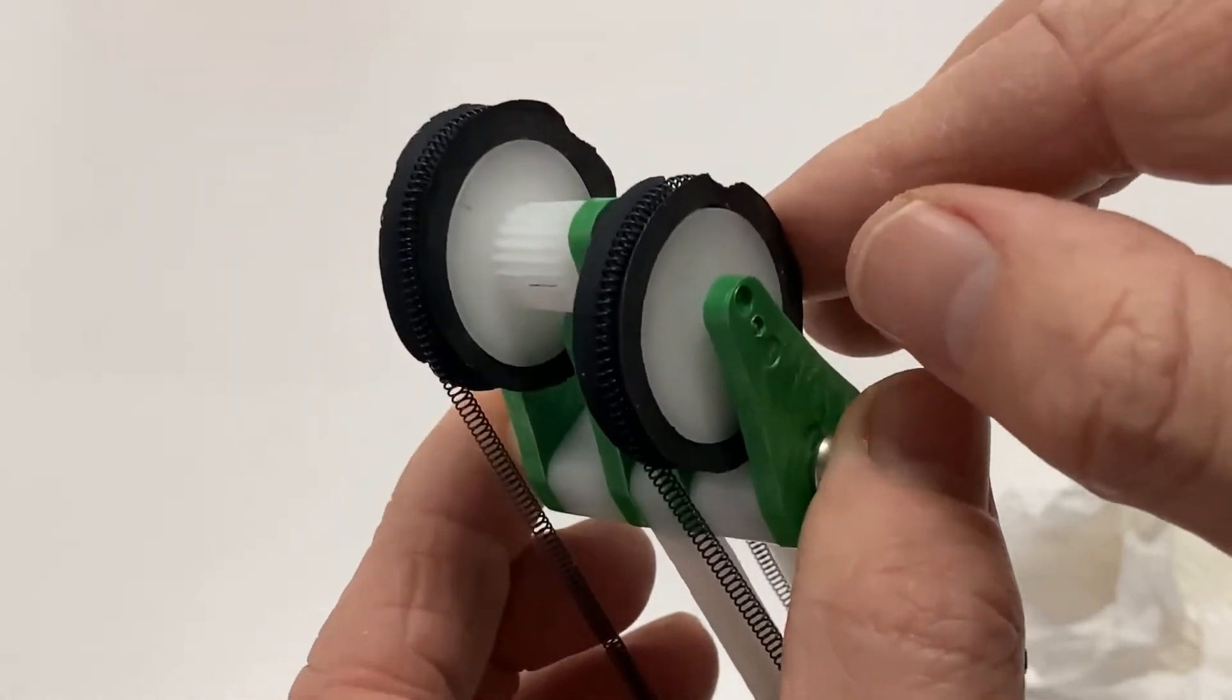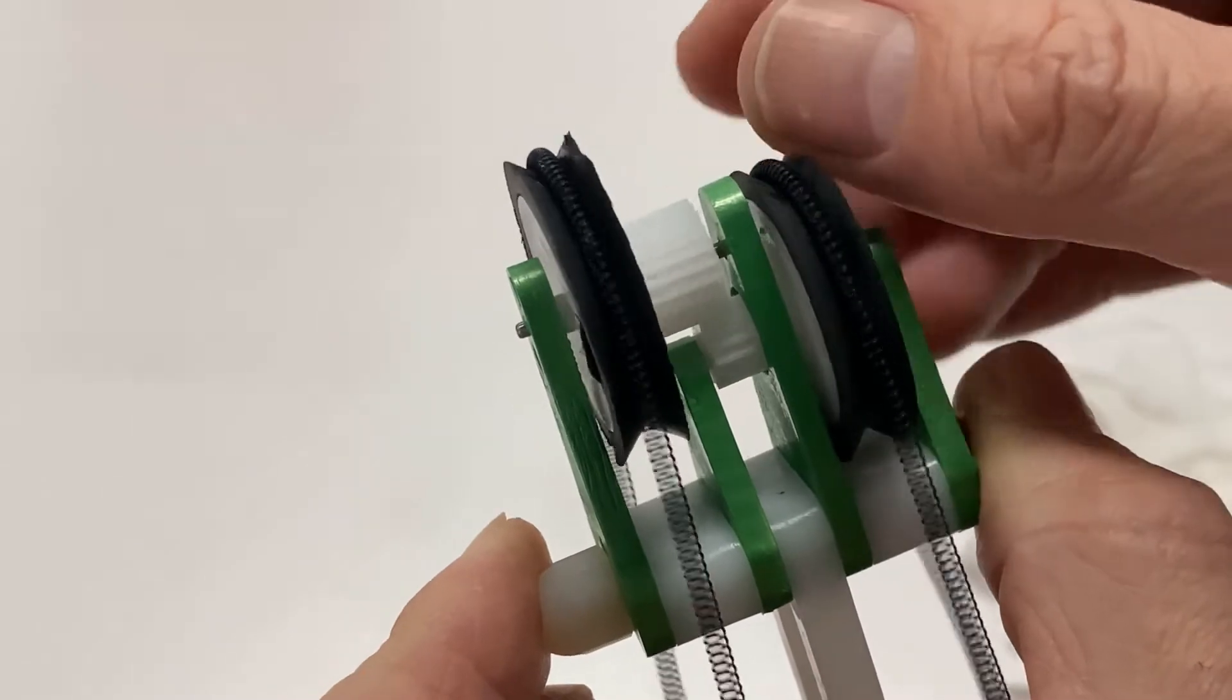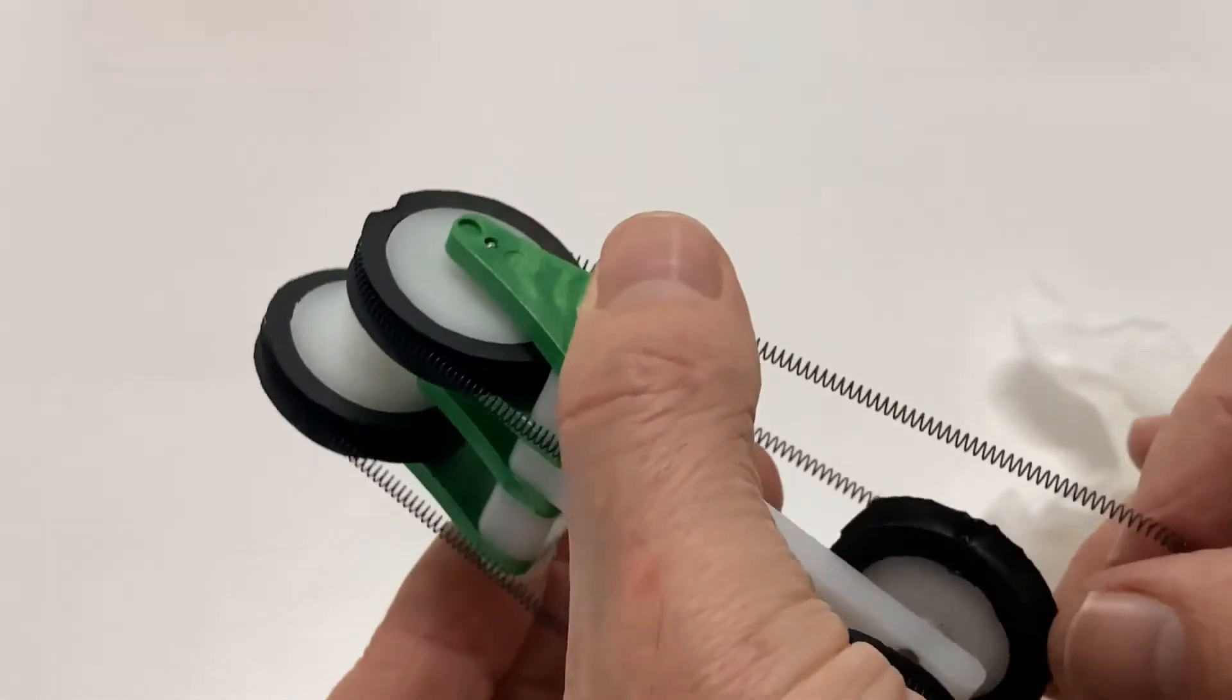The pulley attached to the smaller gear rotates faster than the pulley with the larger gear. This means that the wire spring passing over the smaller gear is stretched.